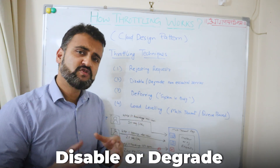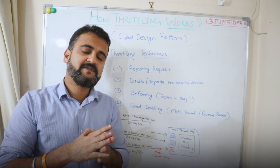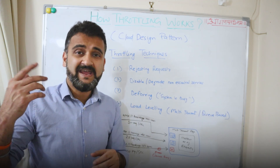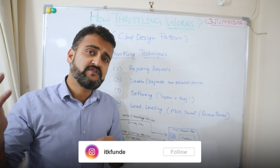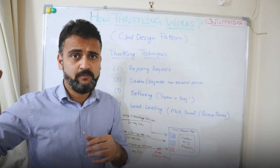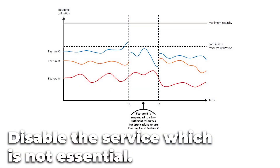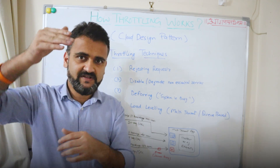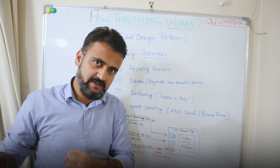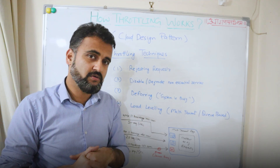The second technique is disable or degrade. In your application there would be certain features which are not necessary. For example, if your application has three features A, B, and C — where A and C are very important and B is less critical — and feature C starts consuming a lot of CPU and memory, breaking the threshold, then using throttling you could disable feature B so that the remaining resources are shared with feature C. Once utilization comes under the acceptable limit, you could re-enable feature B. That's one way of disabling or degrading your service.